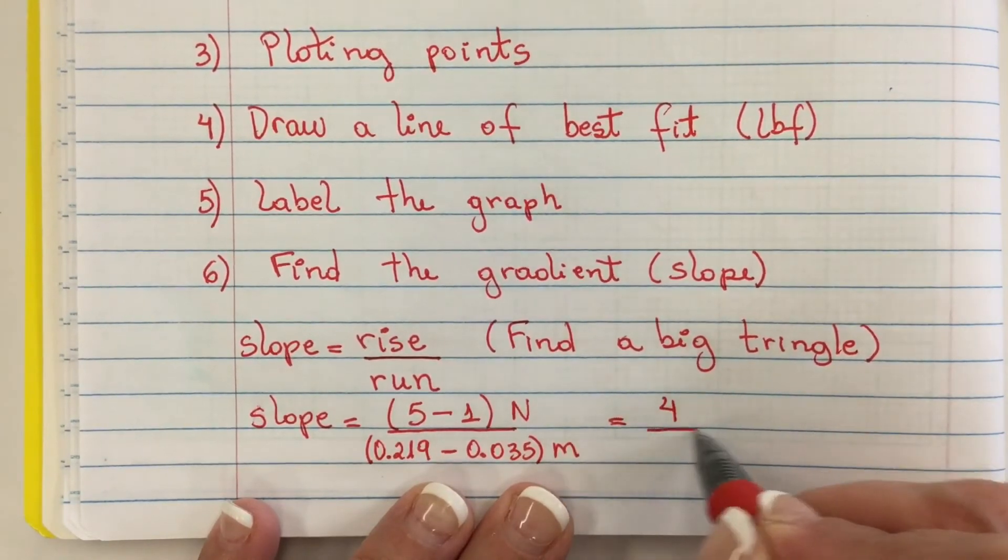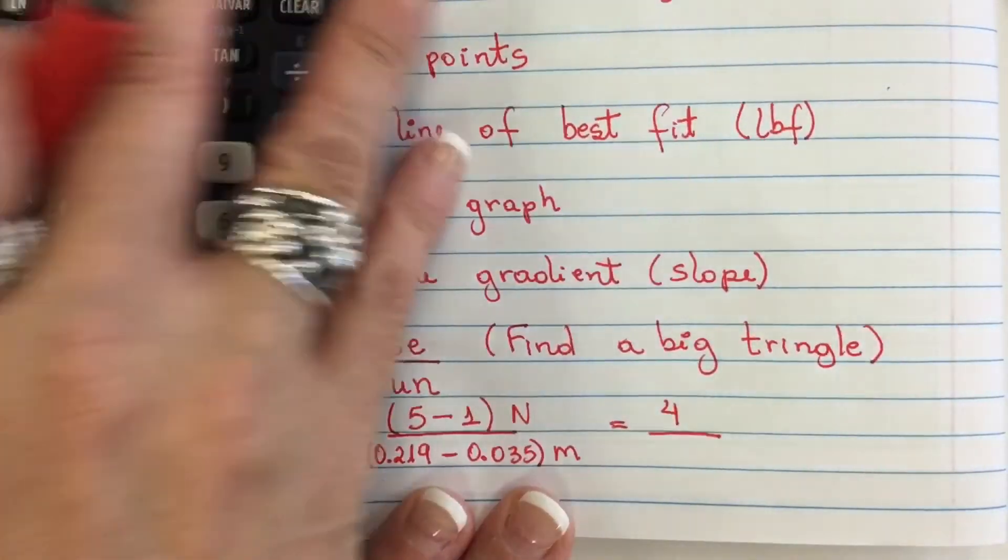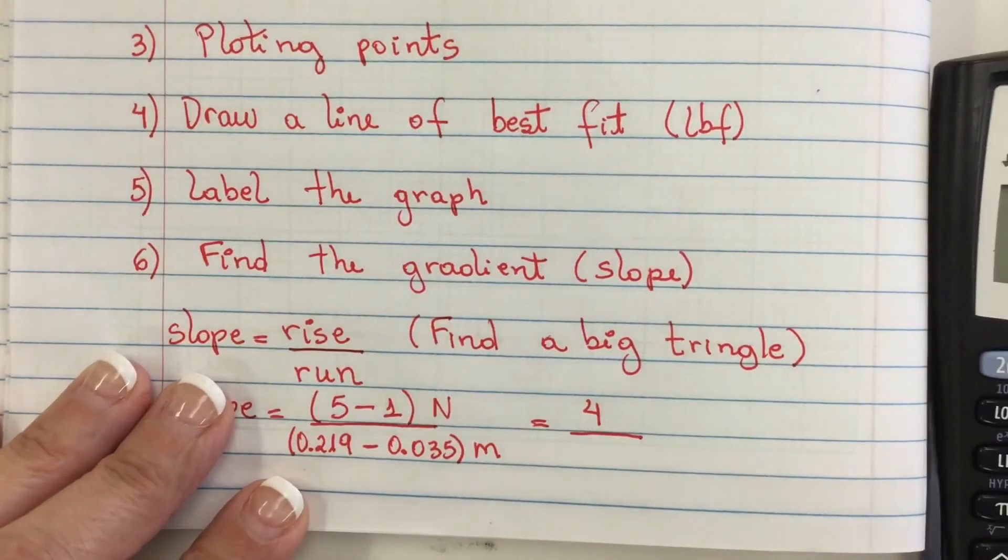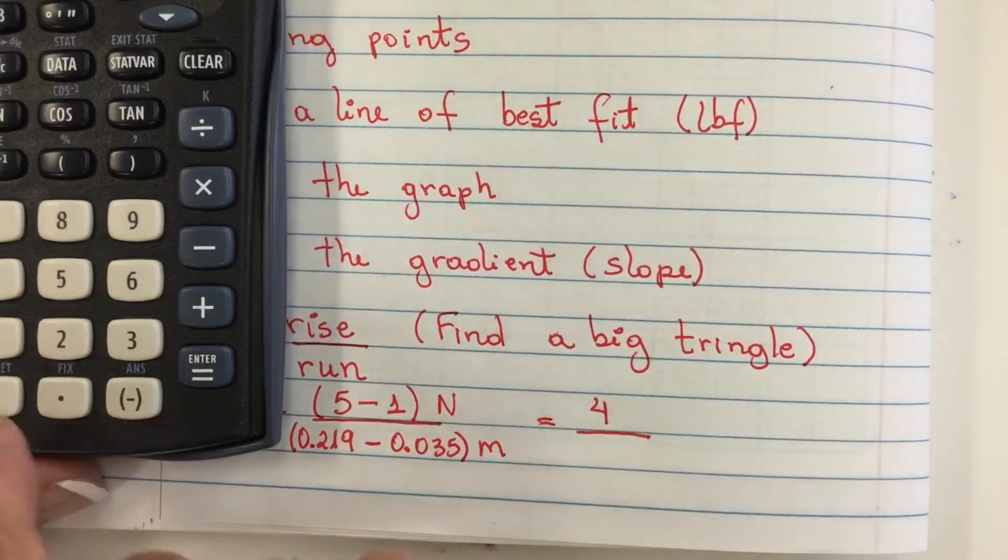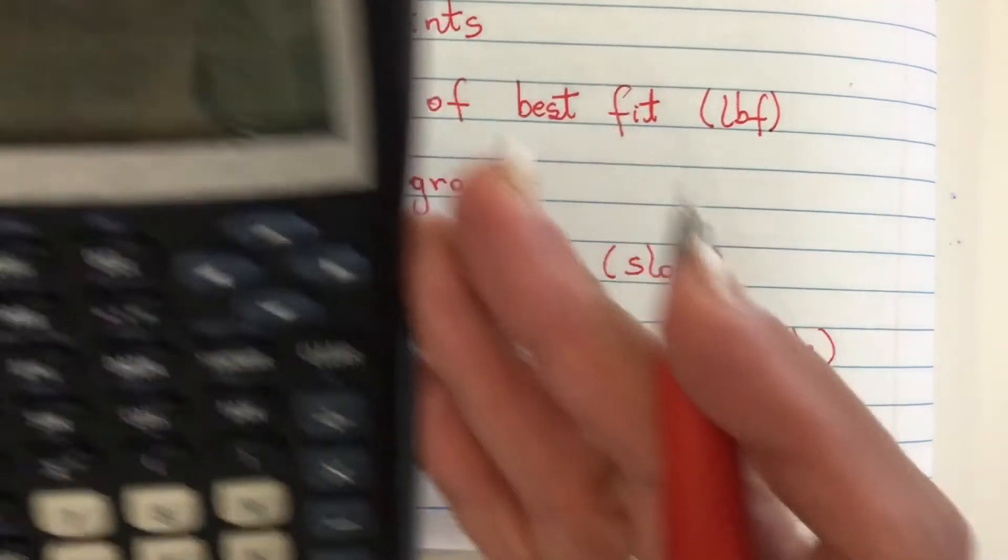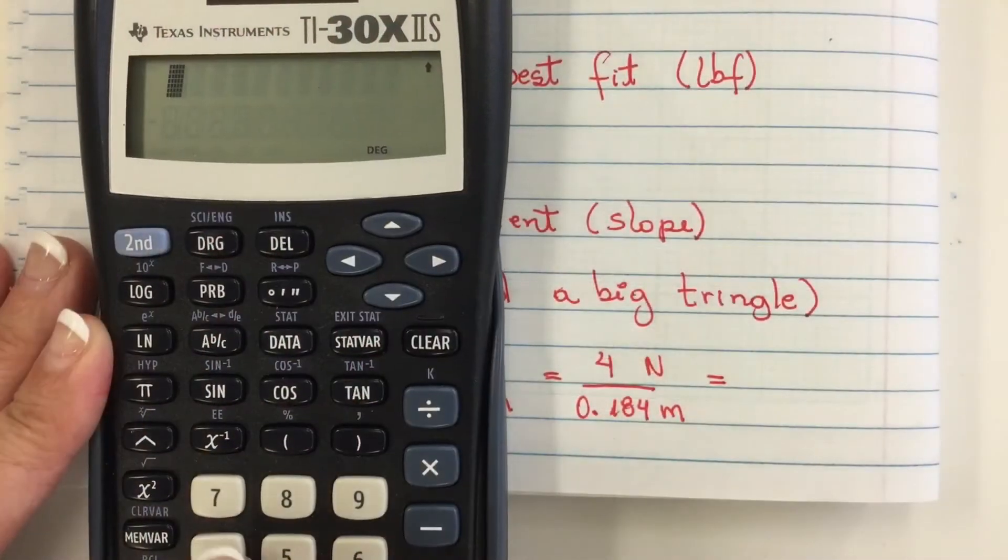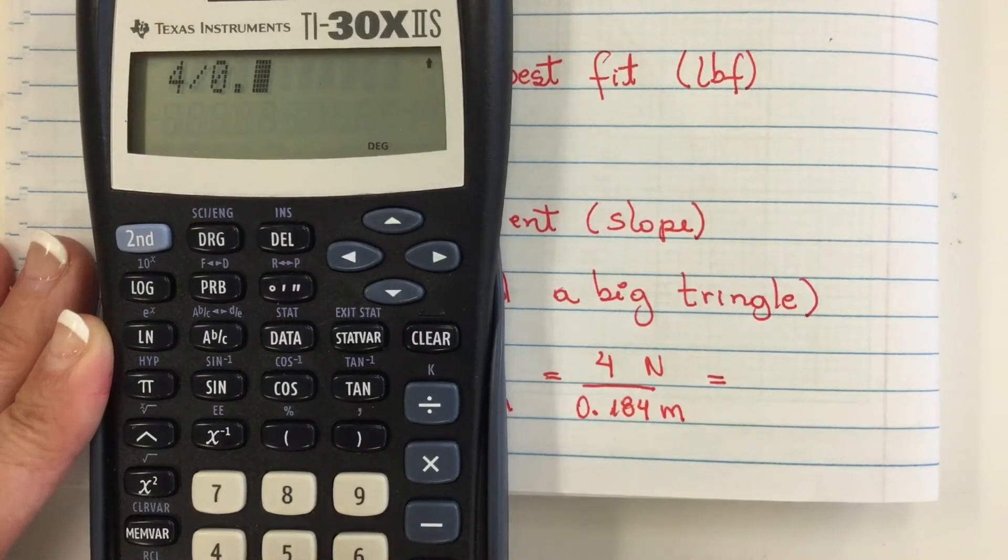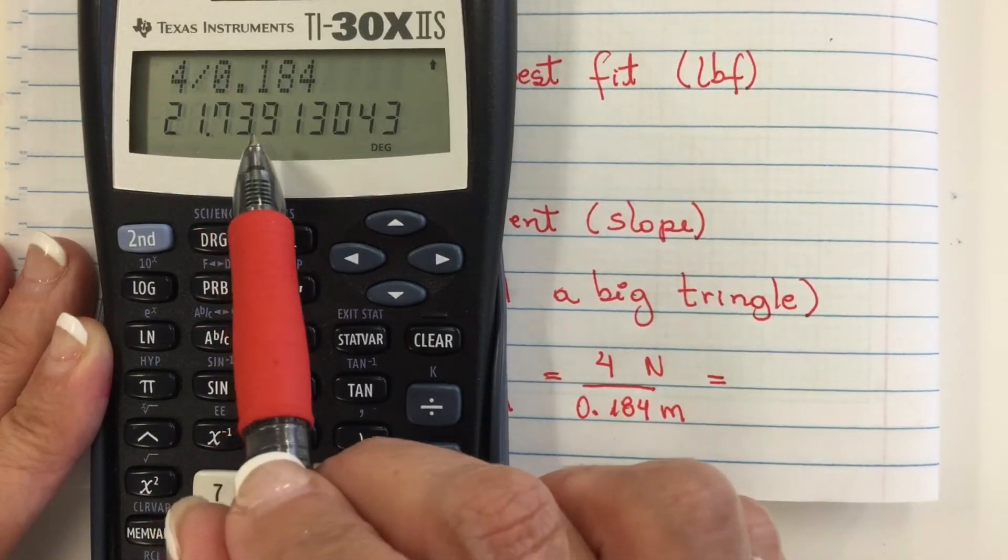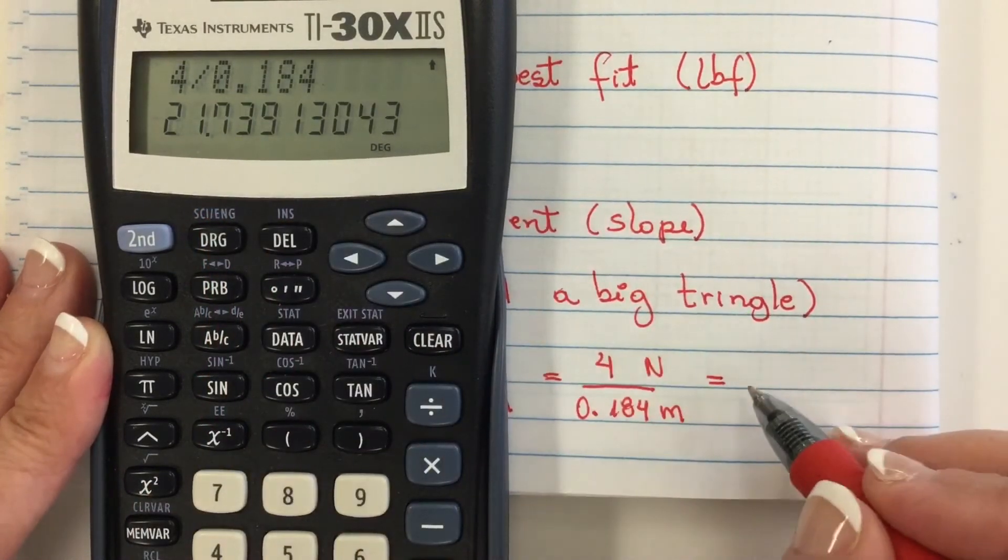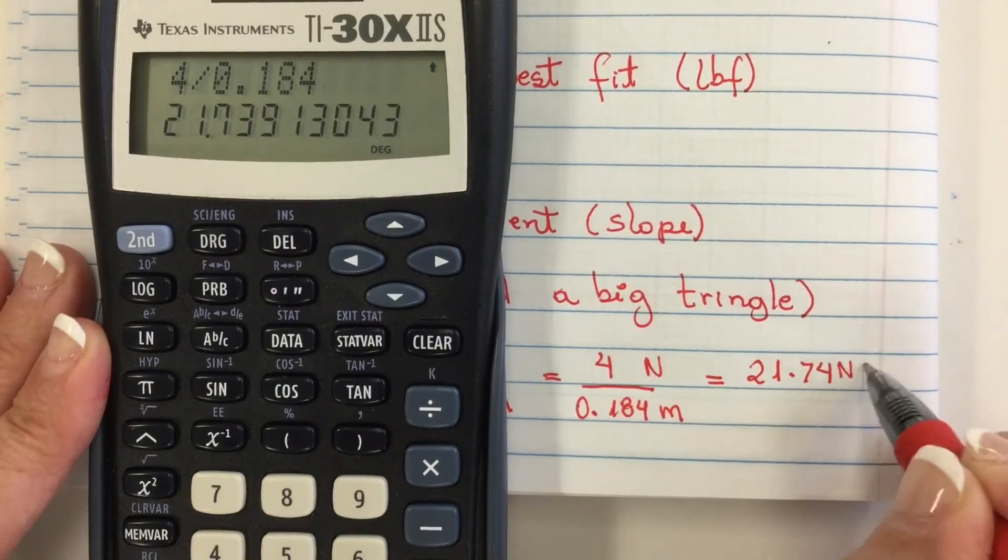Now I'm going to subtract this. That will be 4. And this one is 0.219 minus 0.035, so I have 0.184. Now I'm going to divide 4 divided by 0.184, I have 21.739. I'm going to round it to 21.74 here. So this is 21.74 and the units is Newtons per meter.